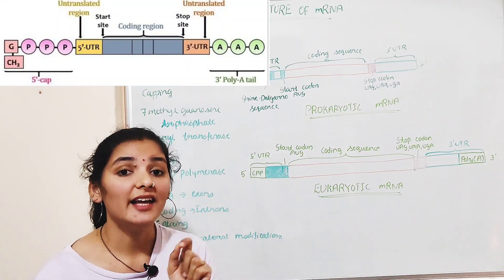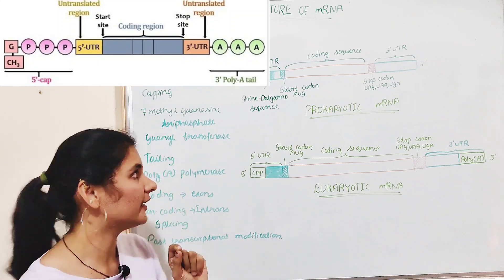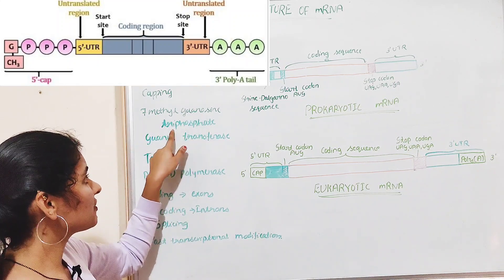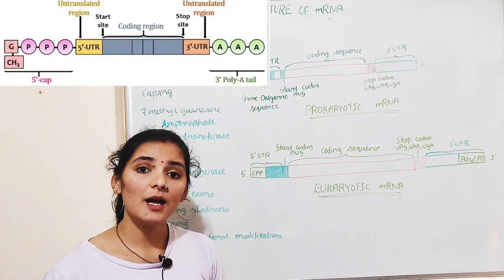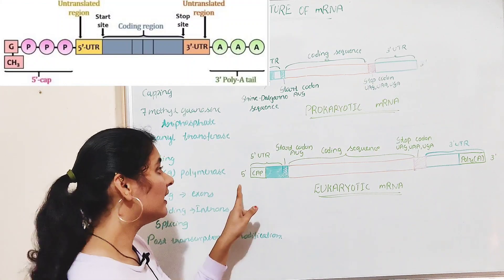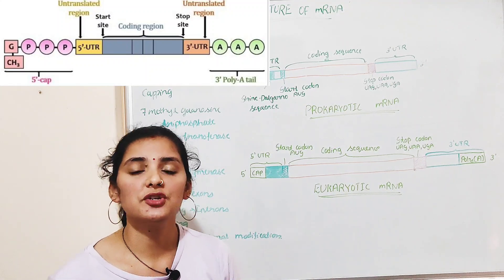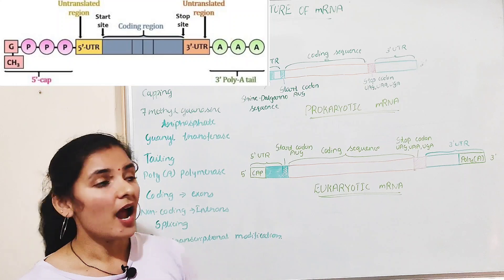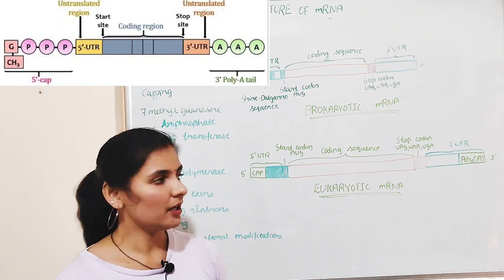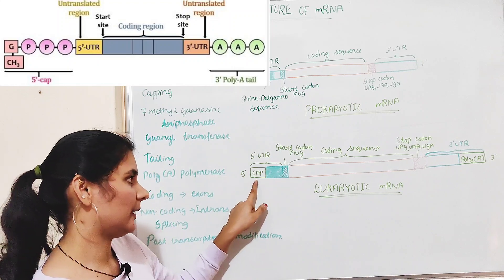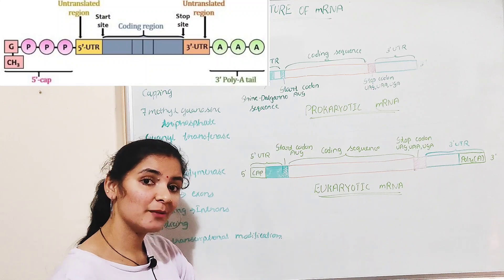Guanyl transferase adds the modified nucleotide 7-methylguanosine triphosphate to the 5' end of eukaryotic mRNA, and that process is called capping. This cap is of great significance because it protects the mRNA from degradation by nuclease enzymes and also helps during the initiation of translation.